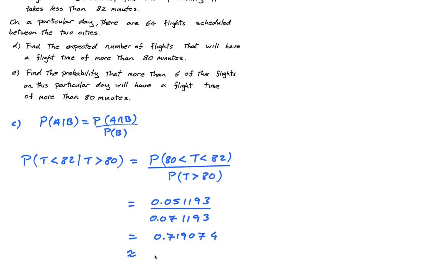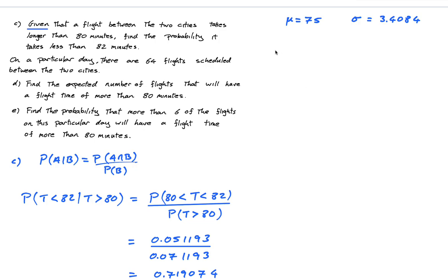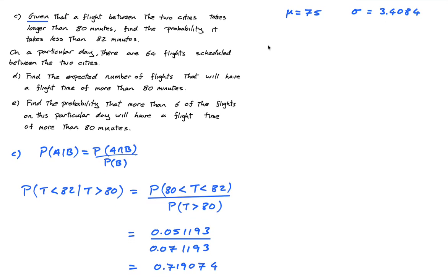Okay, that's part c. Part d says on a particular day there are 64 scheduled flights between the two cities. Find the expected number of flights that will have a flight time of more than 80.